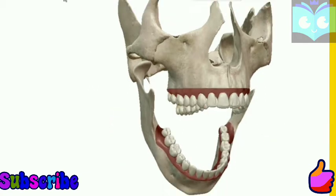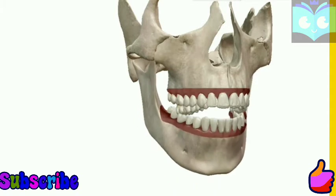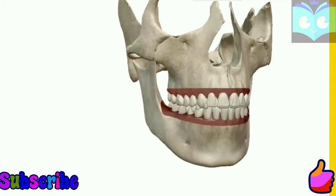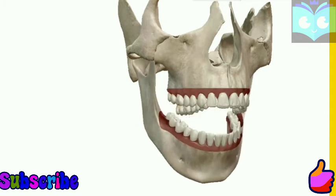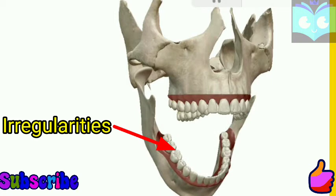The second type is Bunodont. It means that our teeth have small irregularities on their top surfaces.